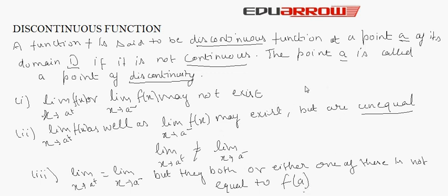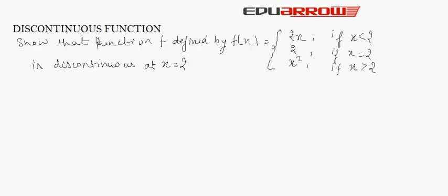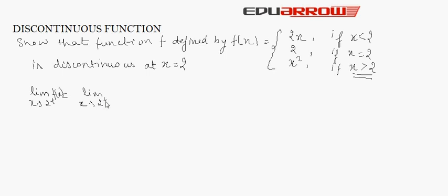Let us see an example of a discontinuous function. In this example, a function f(x) is defined as: f(x) equals 2x if x is less than 2; f(x) equals 2 if x equals 2; and f(x) equals x squared if x is greater than 2. We need to check if it is discontinuous at x equals 2. First, we find the right-hand limit: the limit as x tends to 2 from the positive side of x squared, which equals 4.